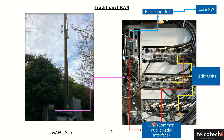Going forward into 5G, this particular interface is evolving and becoming more open. We'll talk about those interfaces in more detail as well. The baseband unit is then further connected on the other side with the transport network via an Ethernet cable, which then connects to the core network.